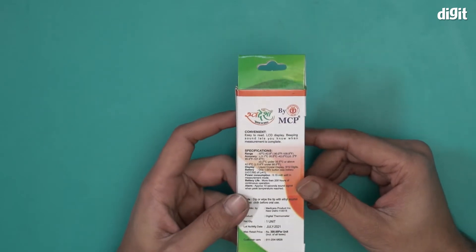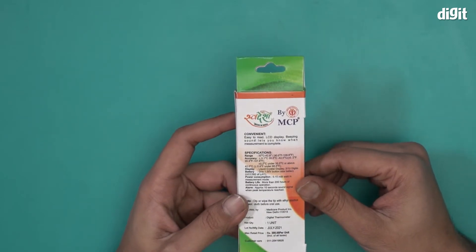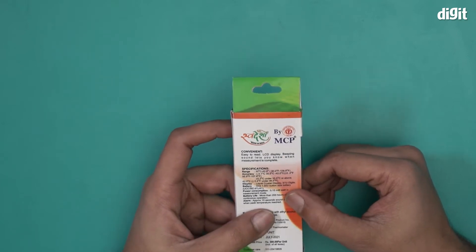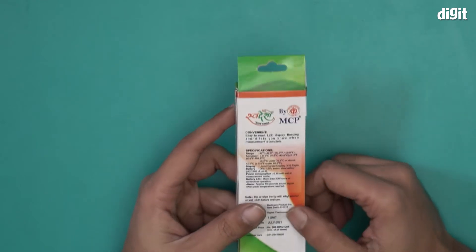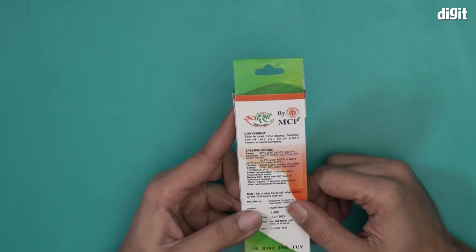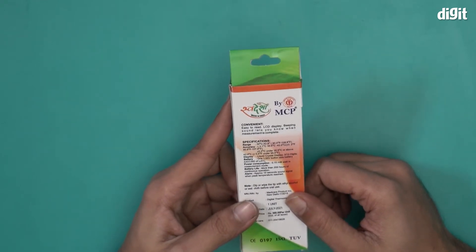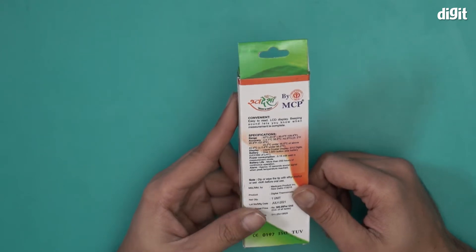The specifications mentioned: range is 32 degrees Celsius to 42.9 degrees Celsius or 90 degrees Fahrenheit to 109.9 degrees Fahrenheit. Battery life more than 200 hours of continuous operation and alarm approximately 10 seconds sound signal when peak temperature is reached.